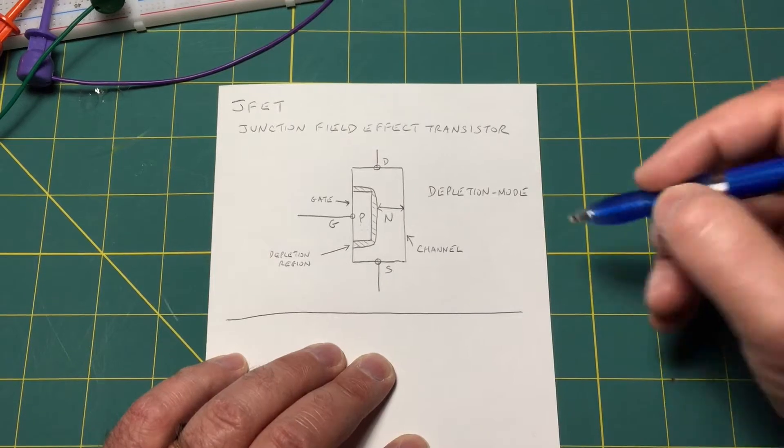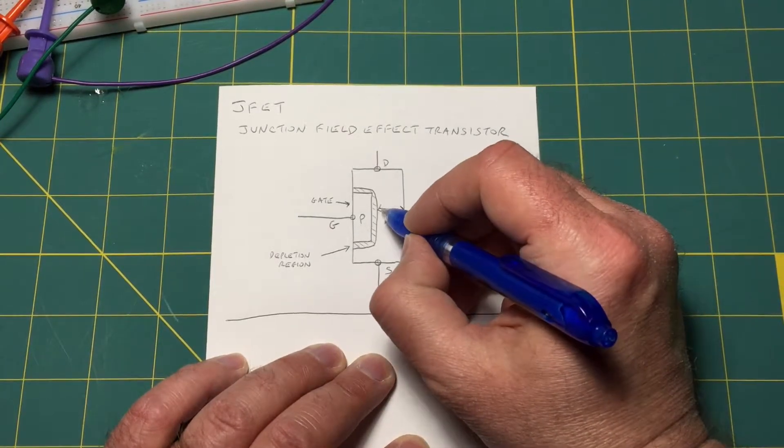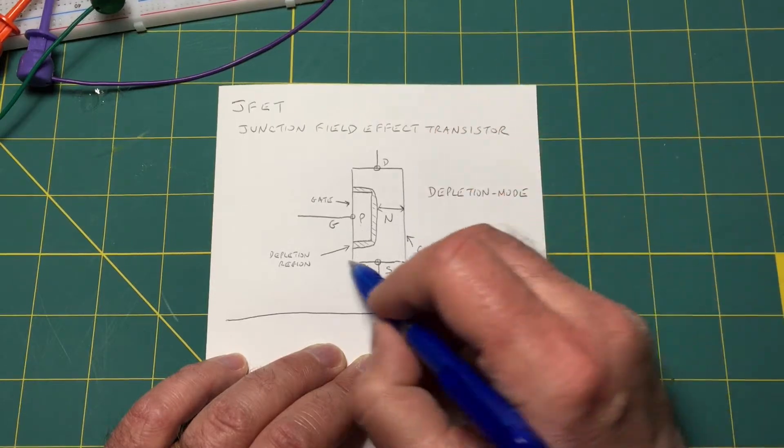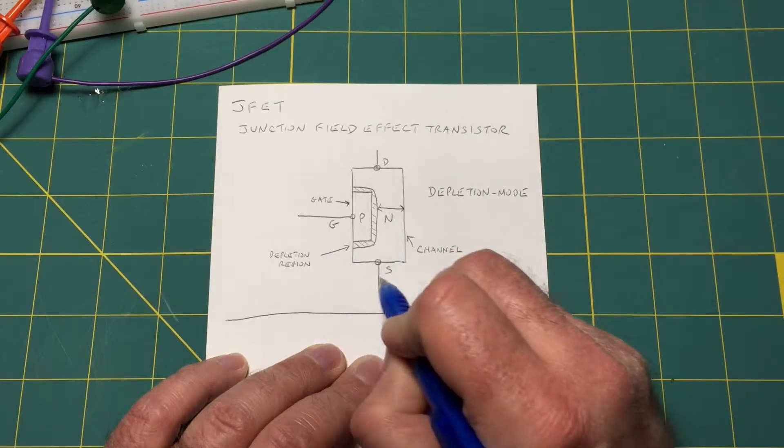Now the whole idea behind the JFET is that you can control the width of the channel and therefore you can control the amount of current through the channel by varying your gate-to-source bias.